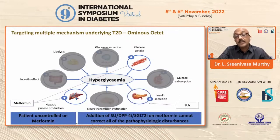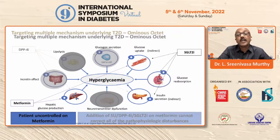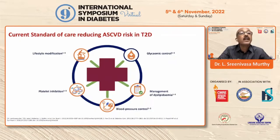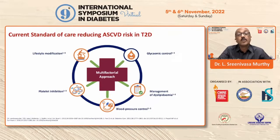You don't just choose a sulfonylurea to bring down blood glucose because glibenclamide is the most potent agent to lower sugars — that is not what we are going to choose today in 2022. It is very important to tackle various molecules at various stages. The current standard of care must include glycemic control along with management of dyslipidemia, blood pressure, platelet inhibition, and lifestyle modification. It is a multifactorial 360-degree cardiometabolic approach required in 2022, not the glucocentric approach.